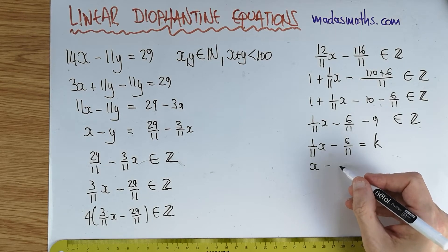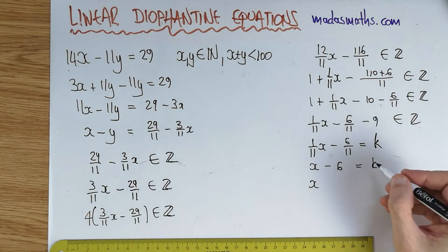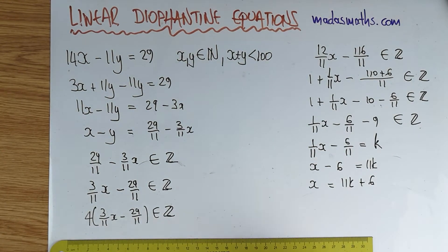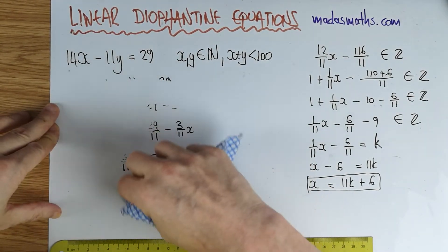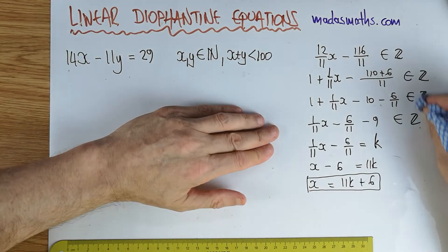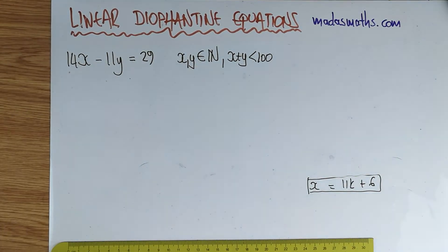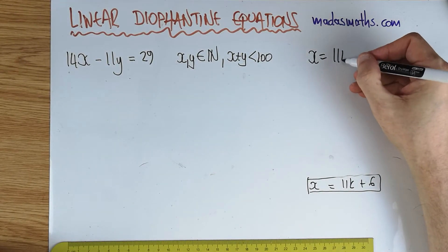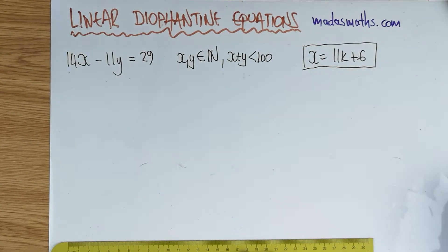So I can times now across by 11. So I can say x minus 6 is equal to 11k. And therefore, that is equal to 11k plus 6. So as I said on my first video, this is a parametric equation that gives us, for different integer values, the possible x values that balance this particular equation. So I'm going to write this solution up there somewhere. So let's say we found that x must be of the form 11k plus 6, where k is an integer.